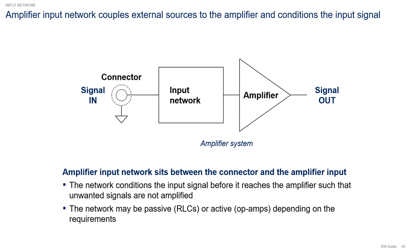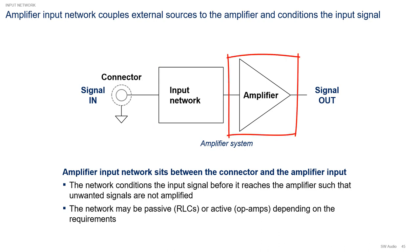Let's now look at the input network of the amplifier system. The amplifier input network sits between the connector and the amplifier input. The input network conditions the input signal before it reaches the amplifier, such that any unwanted signals are not amplified. Examples of unwanted signals are DC and RF. The network may be implemented with passive components like RLCs or active components like op-amps, and the implementation choice depends on the requirements of the amplifier.